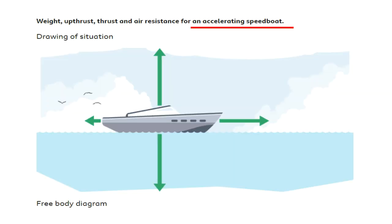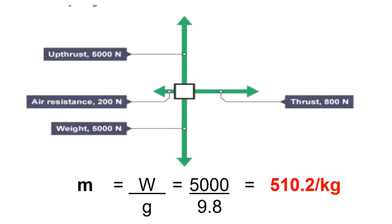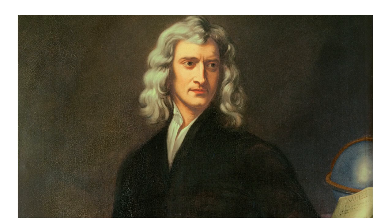An accelerating speedboat stays at constant height — its weight is matched by the upthrust of the water. However, it is accelerating because the engine's push force is greater than air and water resistance. You can find the mass of the boat by dividing its weight by 9.8.